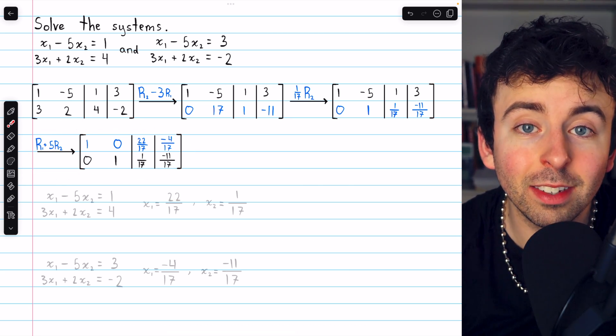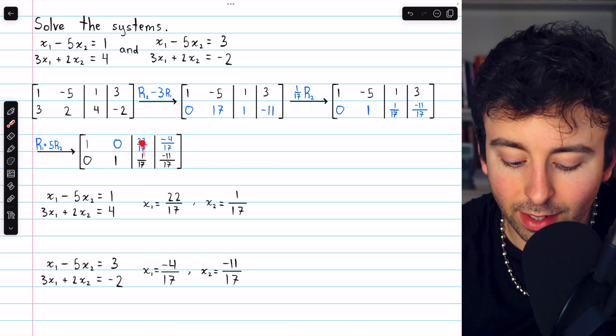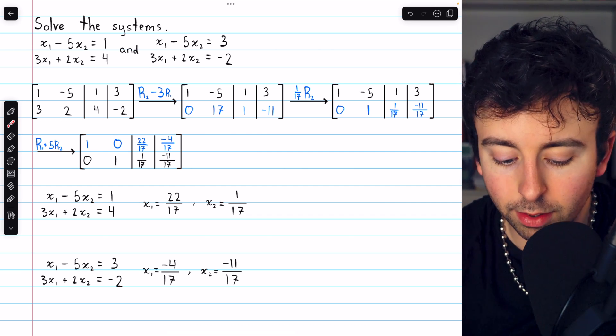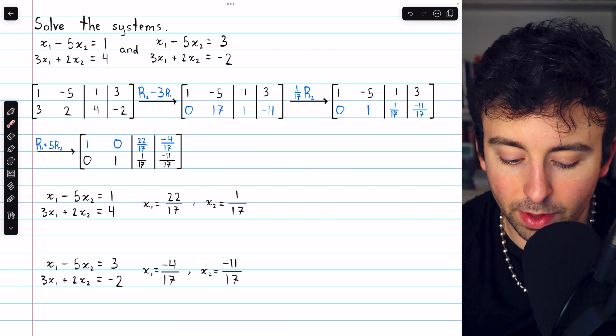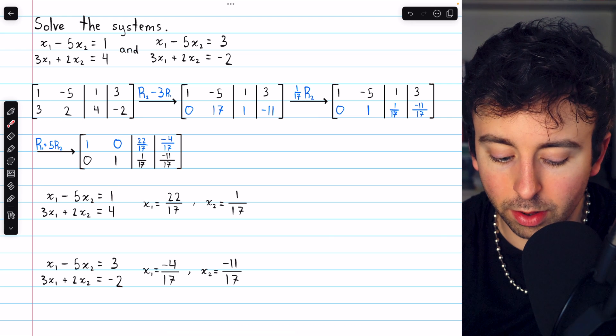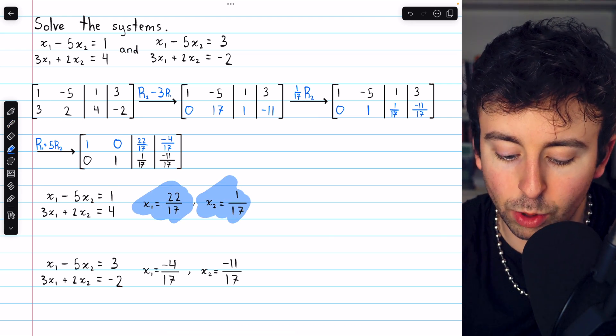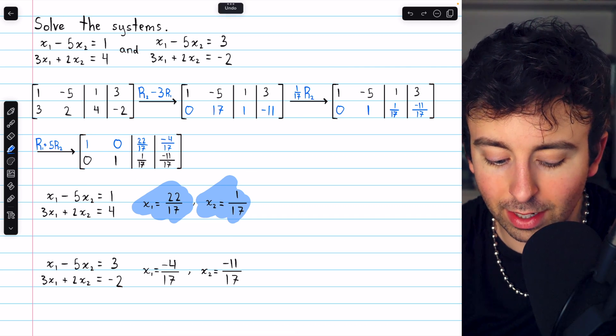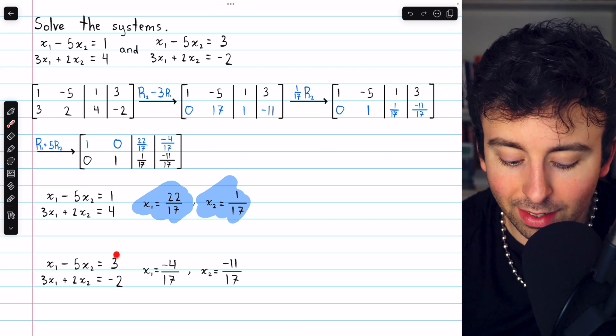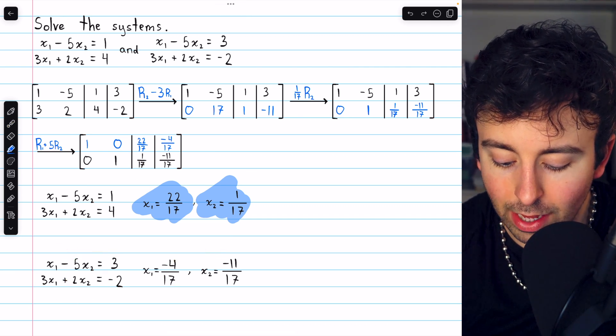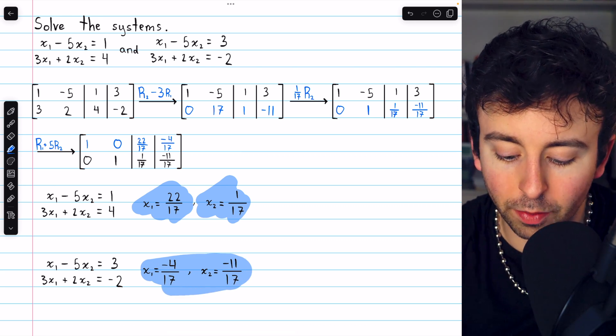We've got the solutions. This first column of constants represents the solutions to the first system of equations. So this system here with 1 and 4, what are the solutions? The solutions are here and here, which we see in that first column of constants. And similarly for the second system, its solutions are given in the second column of constants.